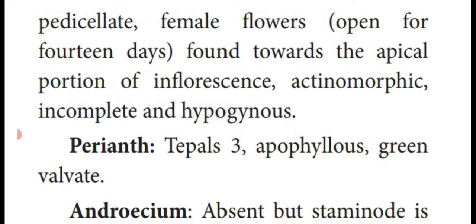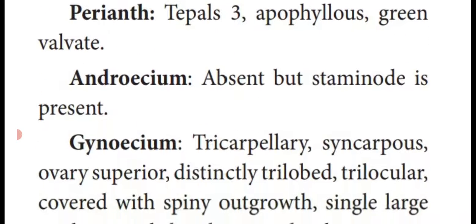Actinomorphic, incomplete — that is, calyx and corolla are absent. Hypogynous — ovary at the top. Perianth: the individual unit is a tepal — three tepals present, they are free — apophyllous — green in color, valvate aestivation. Androecium is absent, but a small portion of the androecium is present — known as staminode.